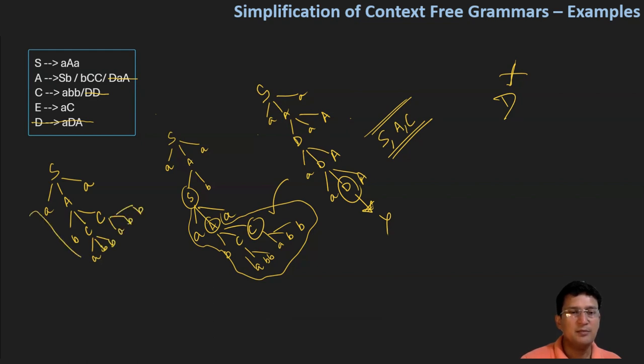It looks like we never reach symbol E. This is why E is a useless, non-reachable symbol, and we need to remove E along with all its productions.